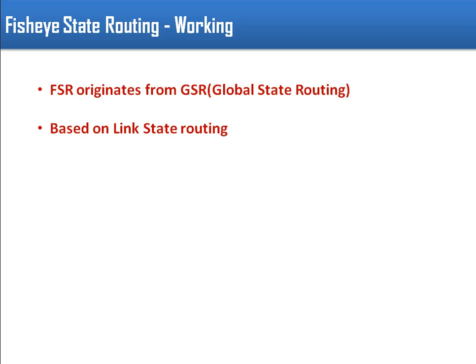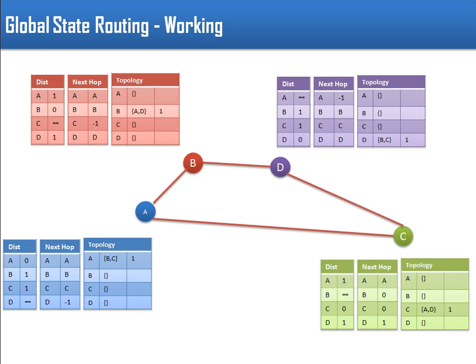The way Fish Eye State Routing is different from link state routing is that in link state routing all link state packets are flooded in the network. Whenever a node sends an LS packet to its neighbors, those neighbors in turn broadcast that information again and again, so information is actually flooded. Whereas in Fish Eye State Routing, information is not flooded - it is sent to only its neighbors.